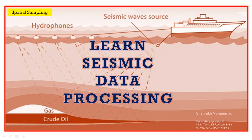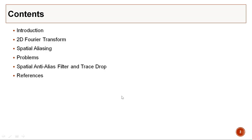Hello everyone. Today I'm going to talk about spatial sampling, which is one of the very important concepts in seismic data processing. The contents for today's presentation include 2D Fourier transform, spatial aliasing, some conceptual problems, spatial anti-alias filter, trace drop, and references.